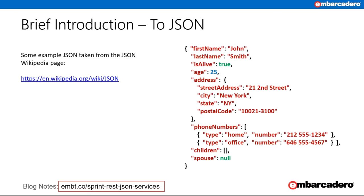Here's a piece of example JSON taken from the Wikipedia page. You can see the name-value pairs, and you'll notice that the fields of the address are encapsulated with braces, making this an address object. Similarly, the phone numbers are encapsulated with brackets, and each of the elements inside that bracket is enclosed in braces. So the phone numbers array is an array of phone number type objects.